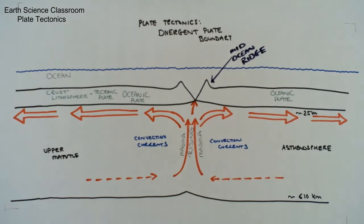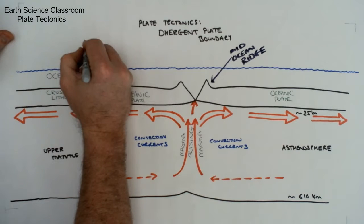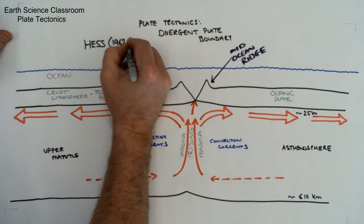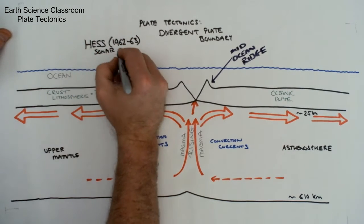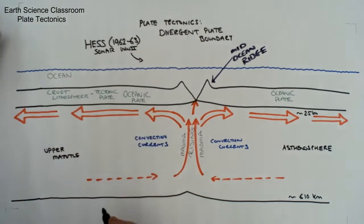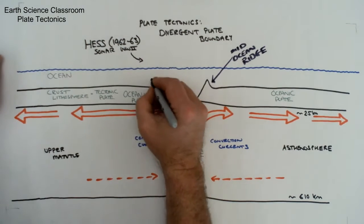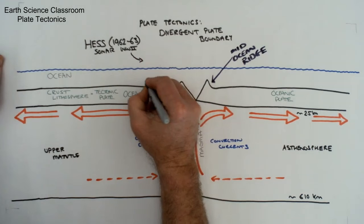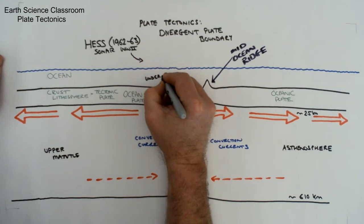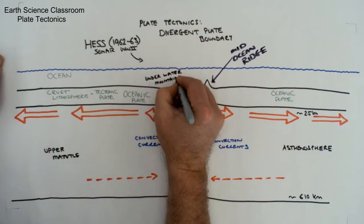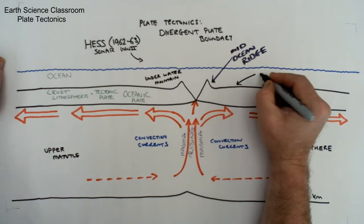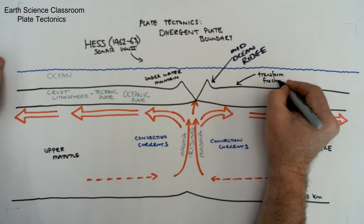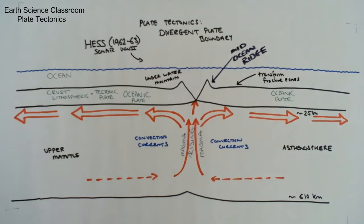In this case, it's called the mid-ocean ridge. Hess in the early 1960s used sonar to first locate this mid-ocean ridge, which connected all the major oceans and went around the entire planet.